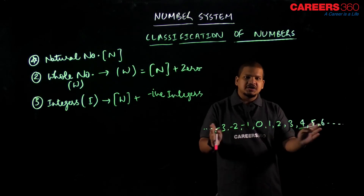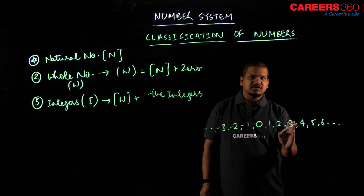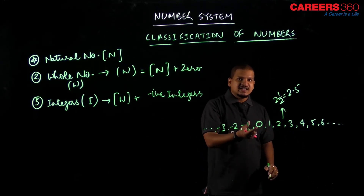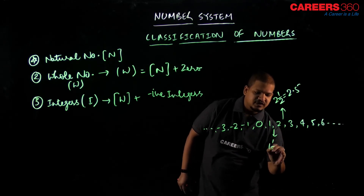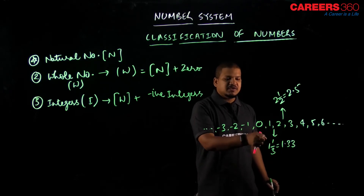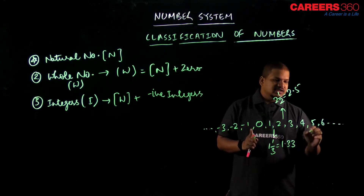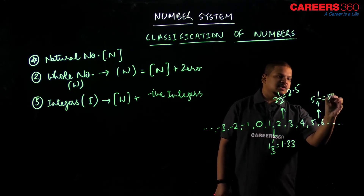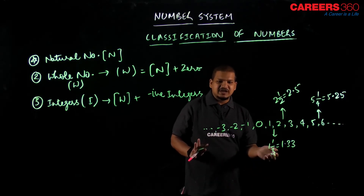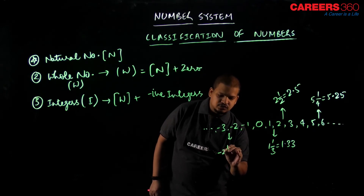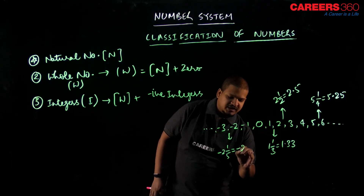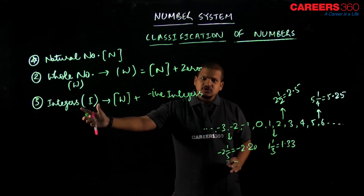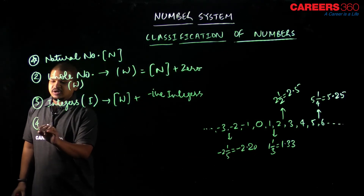Now if you look at this series, there are numbers which are missing. For example, if I go from 2 to 3, there is 2 and 1/2, which can also be written as 2.5 — this is missing. Similarly, 1 and 1/3, which is 1.33, is also missing. From 5 to 6, the number 5.25 is missing. In negative numbers, minus 2 and 1/5, that is minus 2.20, is also missing. These fractions are missing, so if I include fractions in the set of integers, they will be nothing but rational numbers.